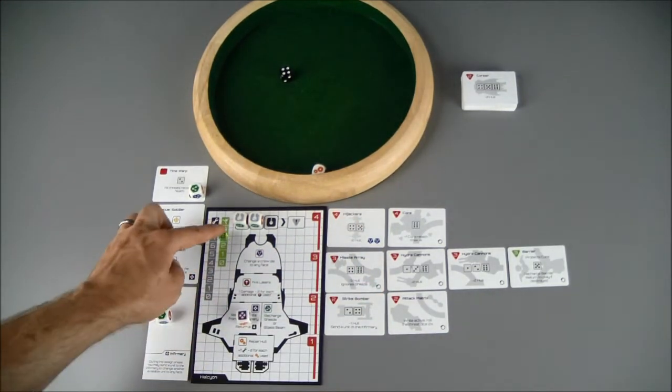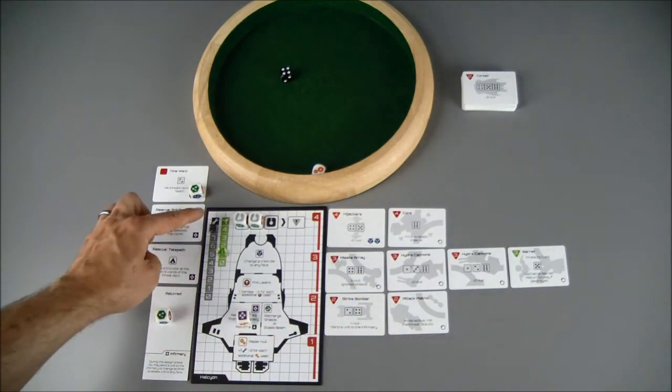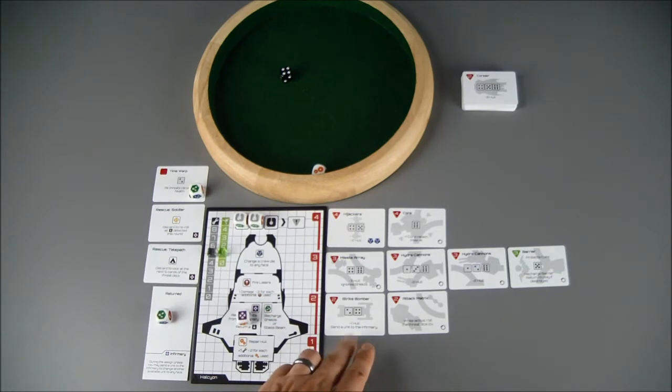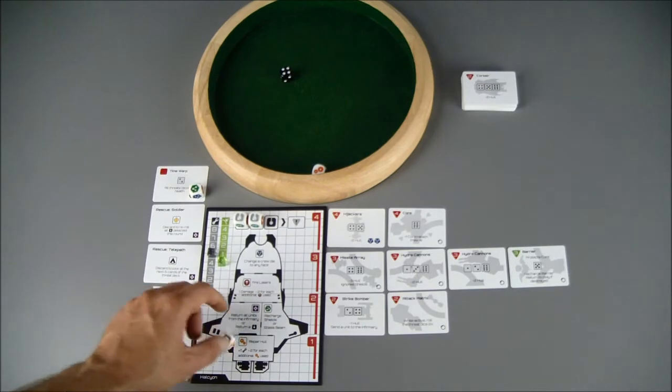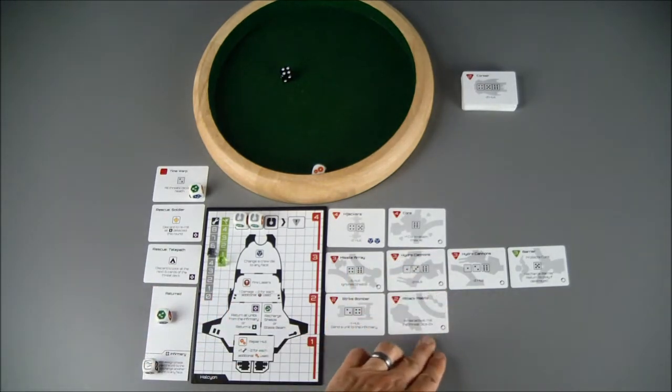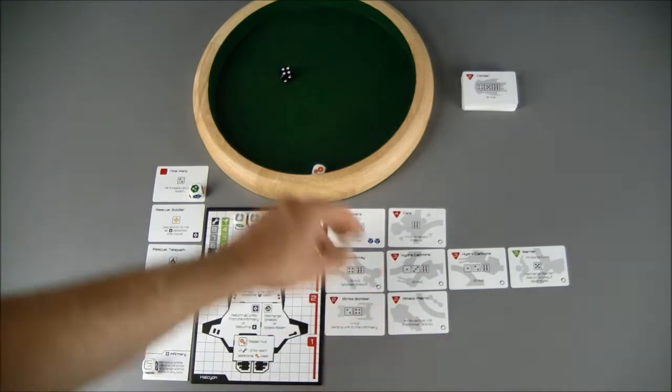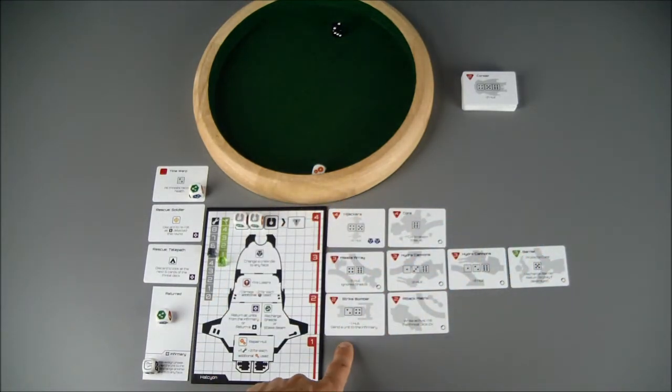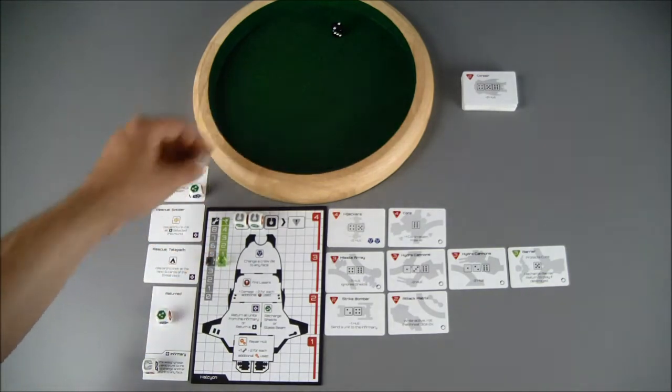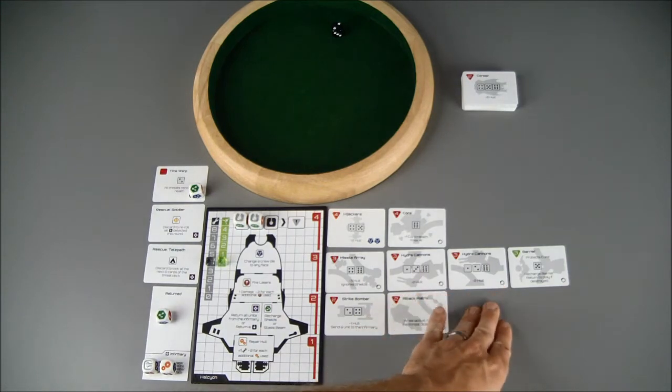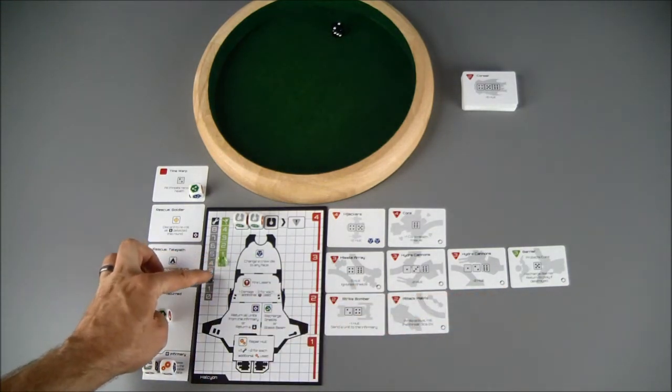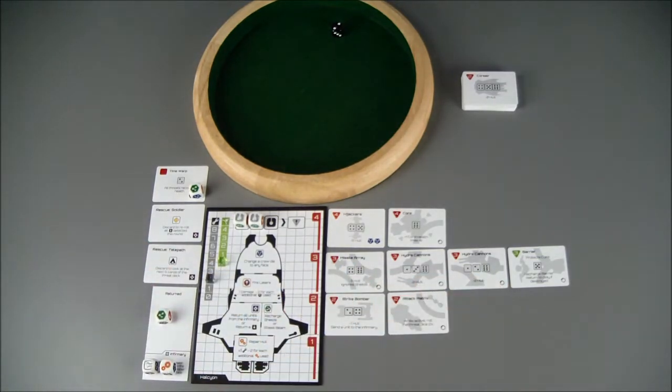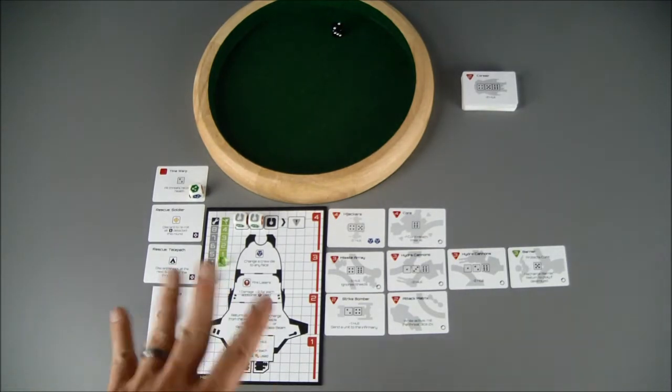The hijackers are still around, so they're going to do two damage. The missile array ignores shields, so it will do three. The strike bomber will do one, and it sends someone to the infirmary. And the four does not do anything else, but the attack matrix is here. And while it's active, we have to roll the threat dice two times. And we get a two. All threats recover a health because of the time warp, but they're all at maximum health. The strike bomber will hit us again, sending another unit to the infirmary. The hydro cannons will hit us for two. And I don't think anything else activates. Now those are the only ones that have twos on them, including the time warp. As you can see, we're down to two hull already in just one round.